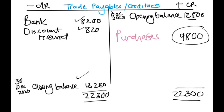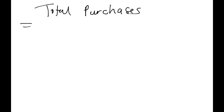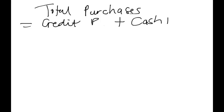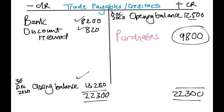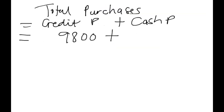That 9,800 is credit purchases, but they asked for total purchases. Total purchases equals credit purchases plus cash purchases: 9,800 plus 4,900 equals 14,700. Using the calculator confirms the answer is 14,700. That is your total purchases for 30 December 2020.